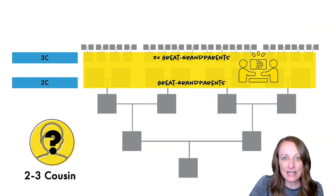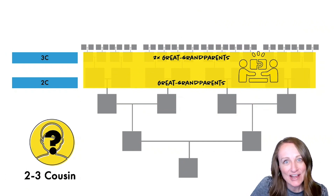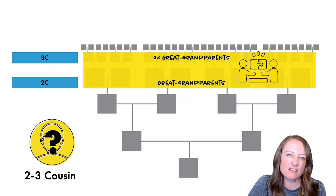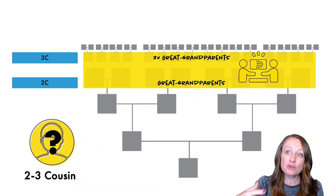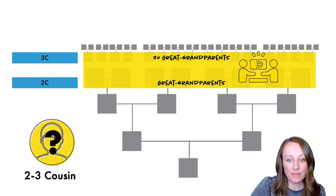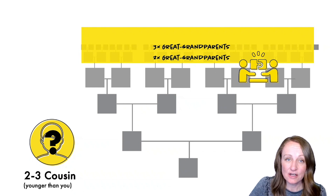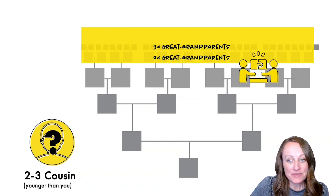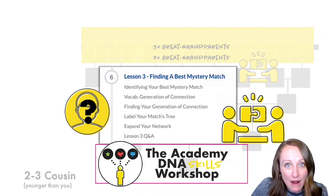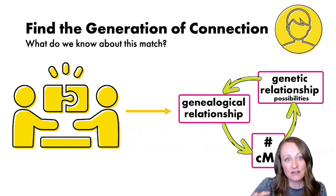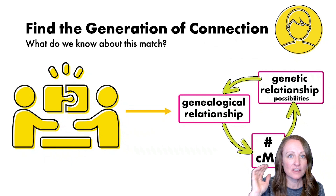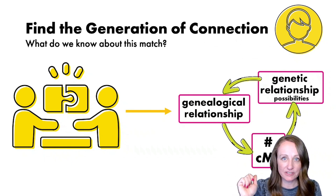When you have a mystery match — say a second to third cousin — your DNA test results won't tell you exactly what kind of cousin you have; it'll be a range. That range gives you a generation of connection range, so you know you're likely related to this person somewhere in that section of their pedigree chart. This concept is so powerful that in my DNA skills workshop, we spend almost an entire week of our six-week course discussing it, covering genealogical relationships, genetic relationship possibilities, and the number of centimorgans.